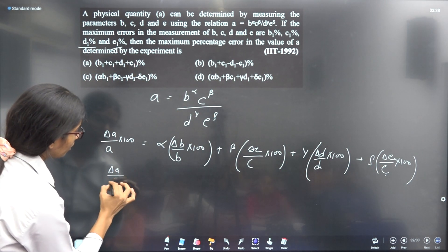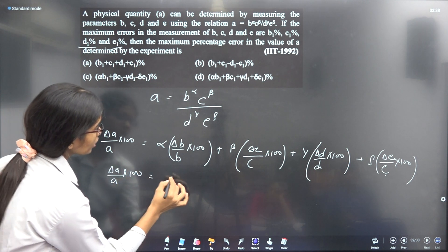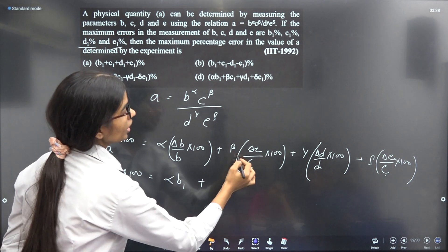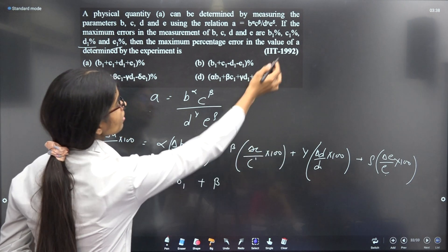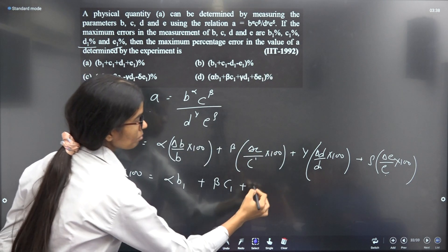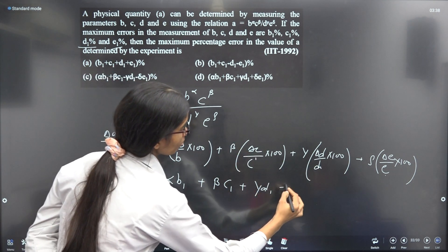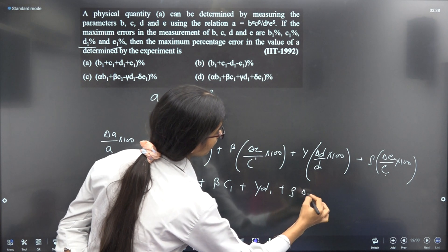So this becomes α(ΔB/B × 100) which is αB1, plus β(ΔC/C × 100) which is βC1, plus γ(ΔD/D × 100) which is γD1, plus ρ(ΔE/E × 100) which is ρE1.